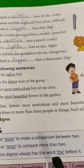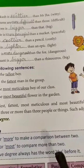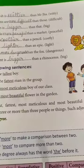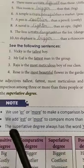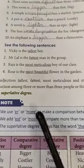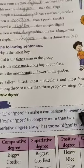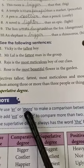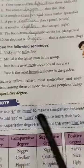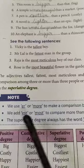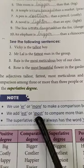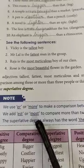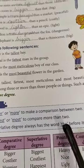There are 3 types of degrees of comparison: positive degree, comparative degree, and superlative degree. Note: we use -er or more to make a comparison between 2 — that is the comparative degree. We add -est or most to compare more than 2 — that is the superlative degree. The superlative degree always has the word 'the' before it.